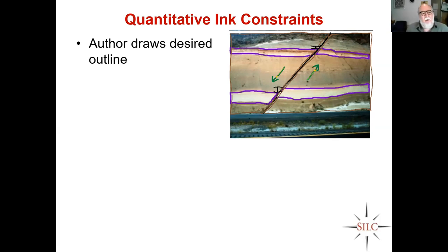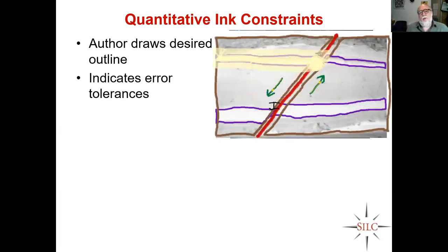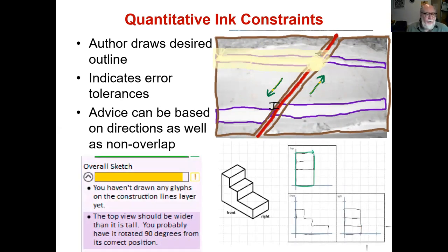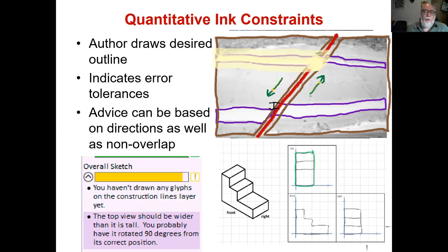The author draws the desired outline and indicates error tolerances — so there's a marker bed, and you see it's pretty broad. The advice can be based on directions of difference as well as things that don't overlap. This lets you do all sorts of things. From an engineering design worksheet, the software can work hierarchically — if it finds something to complain about at the most abstract description, it gives that feedback; otherwise it further visually decomposes things recursively. We needed that in engineering design worksheets, but never needed it in geoscience, interestingly enough.